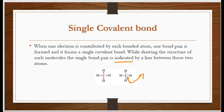For example, carbon hai, iska atomic number 6 hai, iske valence shell mein 4 electrons hain. Valence shell complete nahi hai, to share karega. Hydrogen ke saath bond kiya, to 4 hydrogen apne bonds banayenge. Ab carbon ke gird 8 electrons present hain. Carbon ka valence shell bhi complete hai aur hydrogen ka duplet bhi complete hai. Har bond banane wale atom ne ek ek electron share kiya — single covalent bond. Isi tarah ek hydrogen doosre hydrogen ke saath bond banata hai, dono apna apna ek electron share karte hain, to single bond pair banta hai — yeh covalent bond hai.